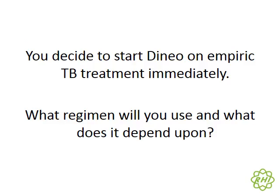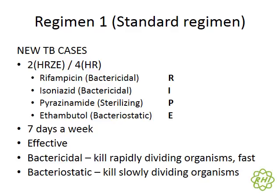Dineo is quite unwell and we decide to start empiric TB treatment immediately. Fortunately the regimen question has become simple — whether patients are GeneXpert positive and rifampicin-sensitive, GeneXpert-negative, or suspected of extra-pulmonary TB, we use our standard regimen one: rifampicin, isoniazid, pyrazinamide, and ethambutol, given seven days a week. Several years ago we used to add streptomycin depending on prior treatment or treatment failure, but we no longer do that. We try to first find confirmation of resistance before adding any other drugs.